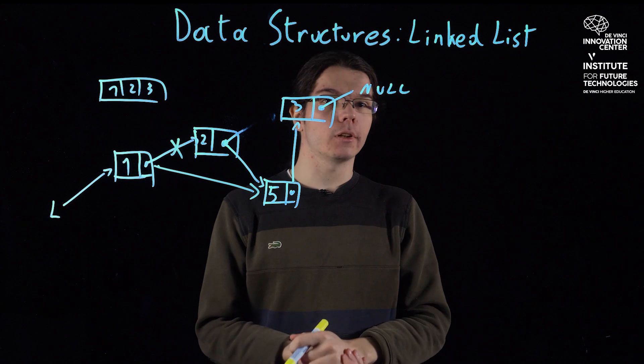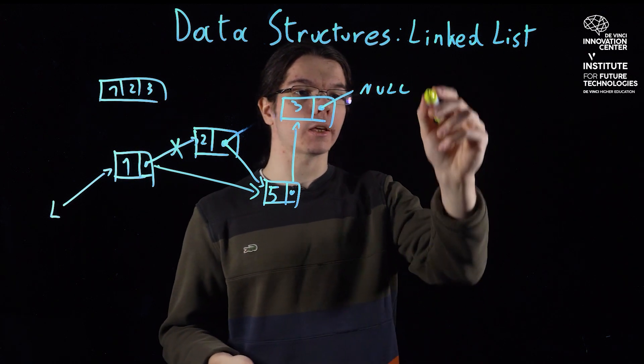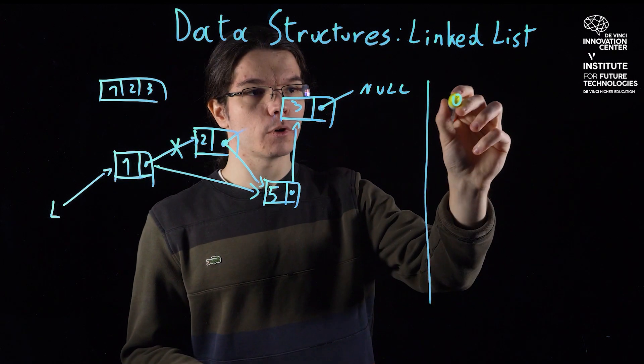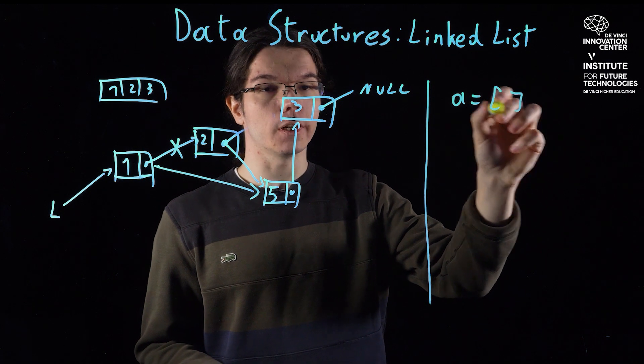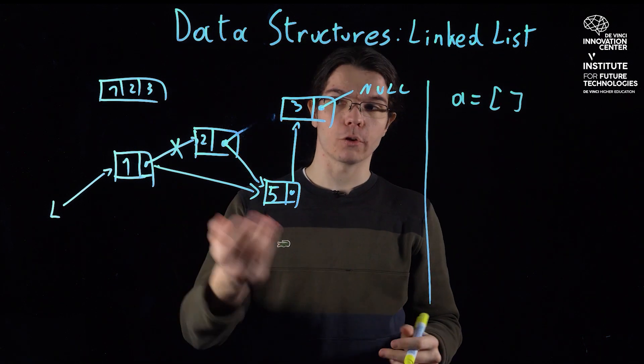So, yeah, arrays and linked lists have their trade-offs, and if you remember in the Python class where you were doing A equals an empty list, it was actually something close to a linked list.